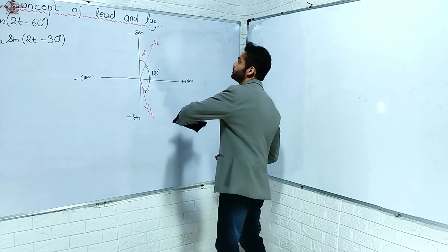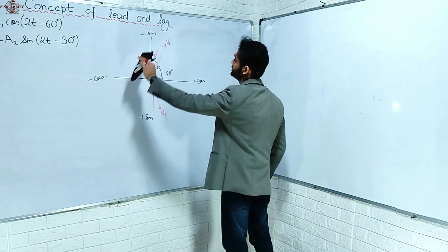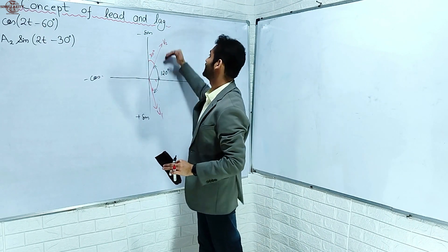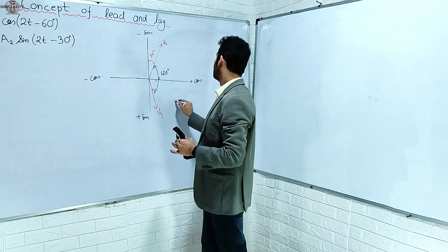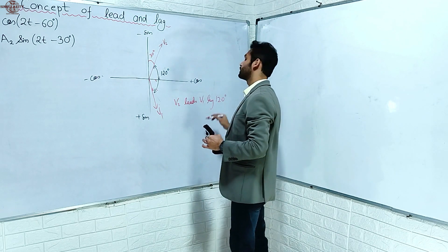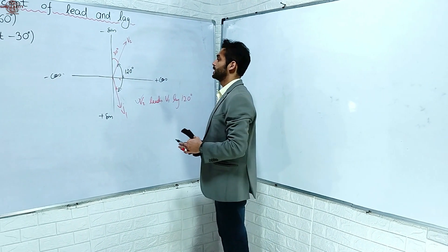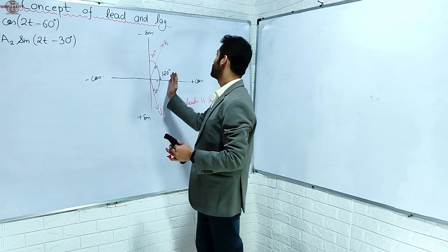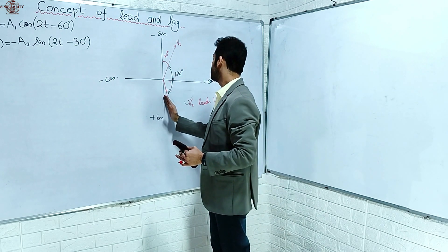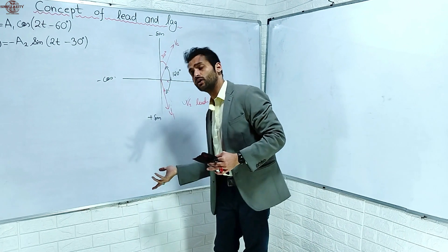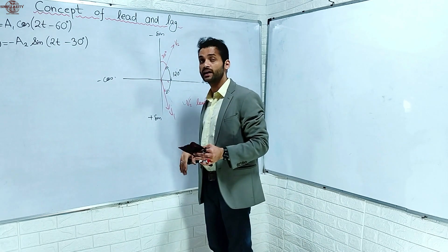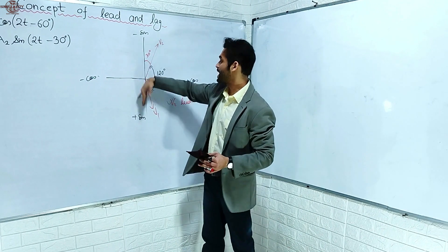Now, the rotation is clockwise. In a phasor diagram, clockwise rotation corresponds to lagging. Looking at this, the angle between V1 and V2 is 120 degrees, and this is a correct statement. So V1 - this statement is correct.